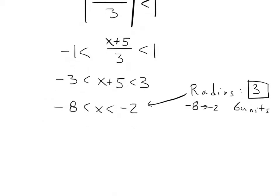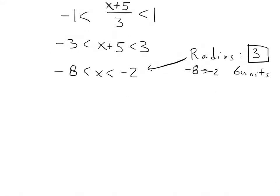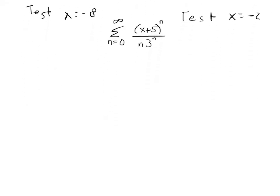But to finish the problem, to find the actual interval of convergence, we have to test those values. So I'm going to test x equals negative 8, and I'm going to test x equals negative 2. That was a terrible 8, but we'll have to deal with it. So in order to do this, I need to look at my original series. So my original series was from 0 to infinity, and it was x plus 5 to the nth over n times 3 to the n.